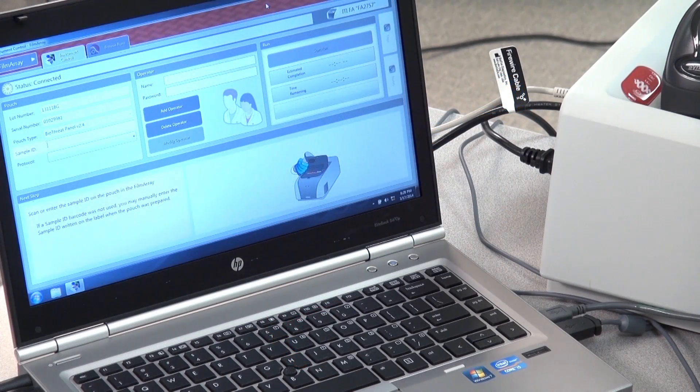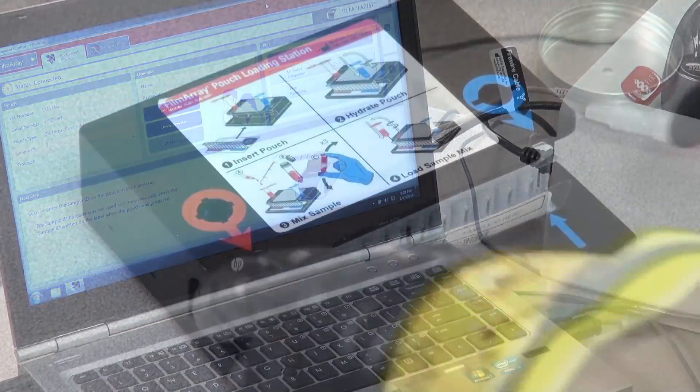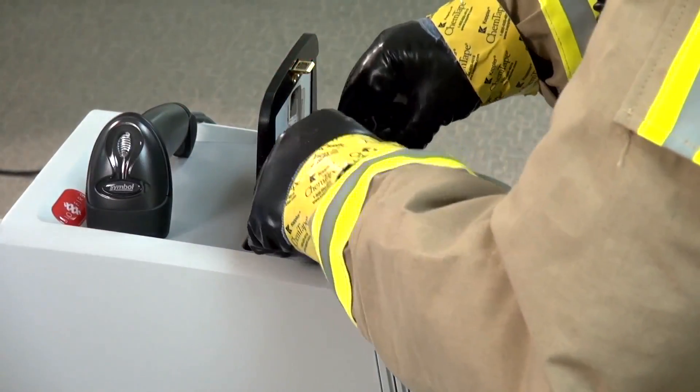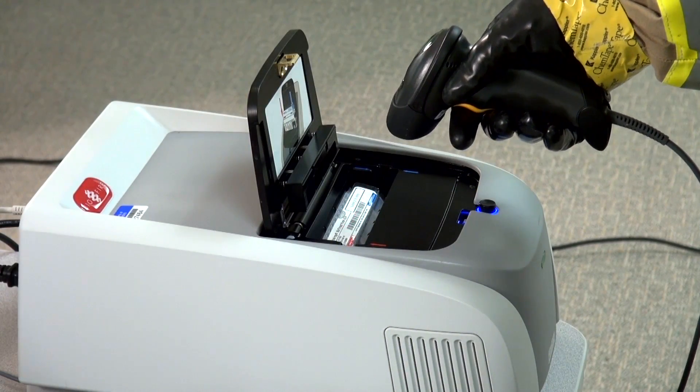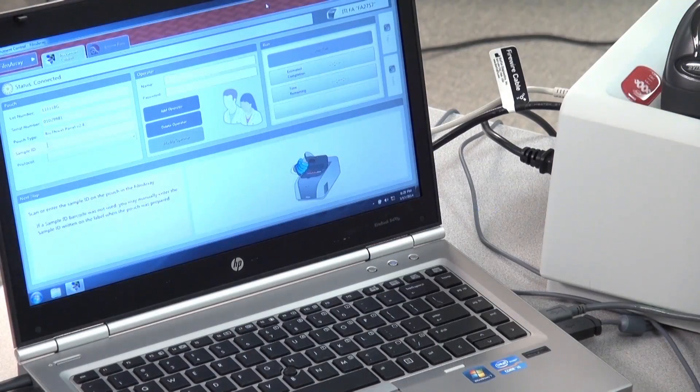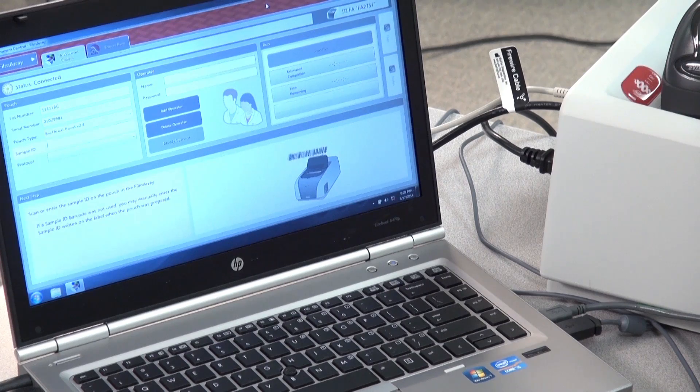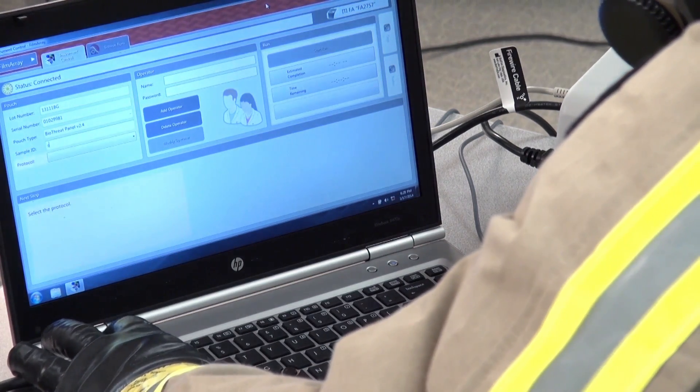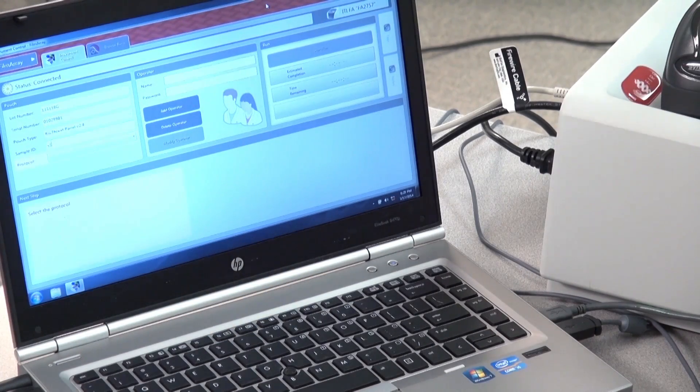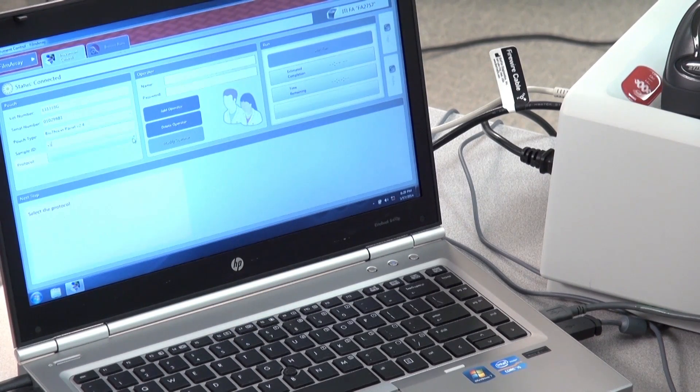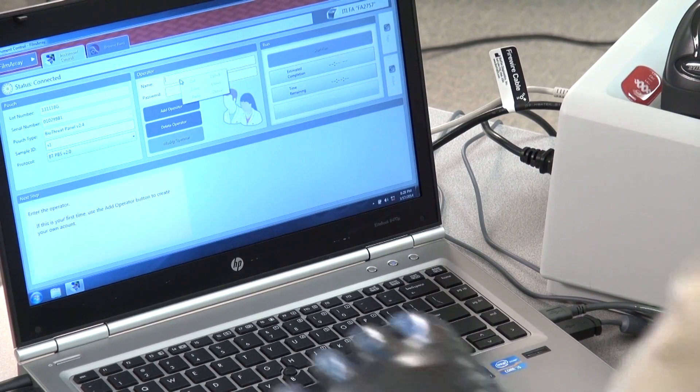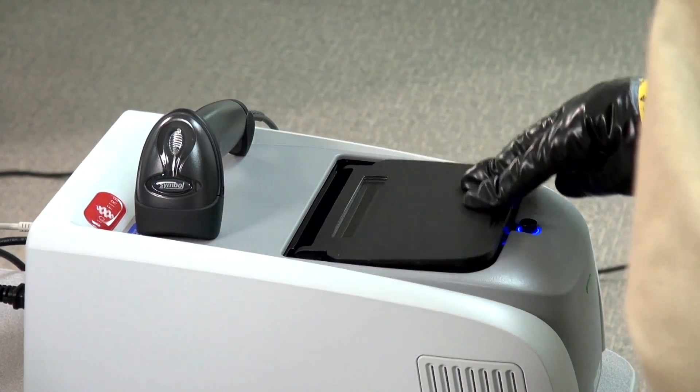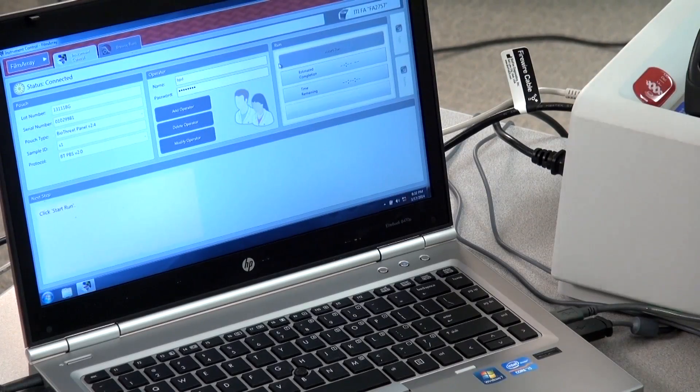Ensure the FilmArray instrument and software are running. Then, remove the pouch from the loading station. Snap the pouch into place and scan the barcode. The software should recognize the pouch once it's inserted. On the screen, enter the sample ID, then select PBS protocol under the protocol pull down. Enter your username and password. Close the FilmArray lid when prompted, then click start run.